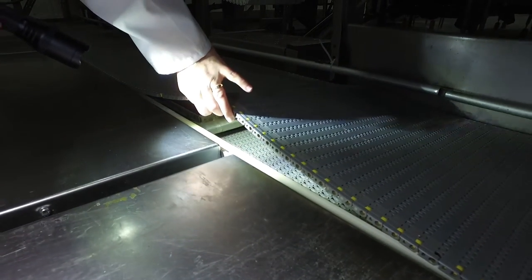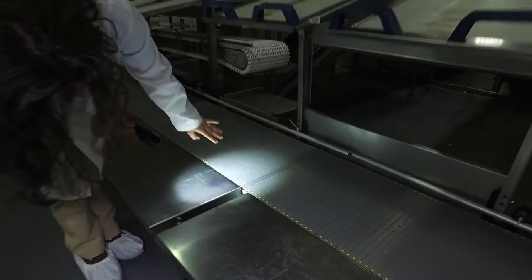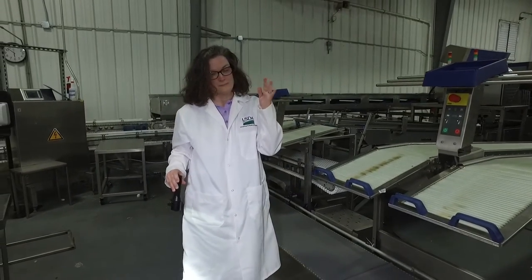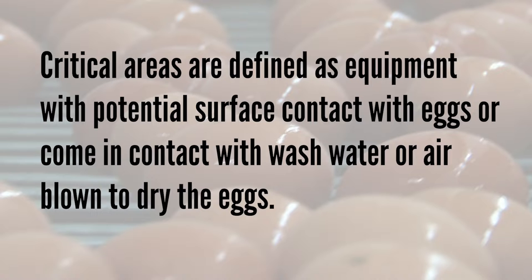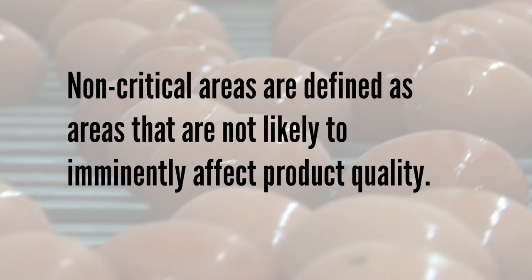So what is organoleptic inspection? Organoleptic inspection assessments include sight, smell, and touch. However, microbial growth will not always be seen, smelled, or felt. Critical areas are defined as equipment with potential surface contact with eggs, or that come in contact with wash water or air blown to dry the eggs. Non-critical areas are defined as areas that are not likely to imminently affect product quality. Non-critical does not mean it is not important. Non-critical unsatisfactory conditions should be addressed after the processing line has been started, unless unable to safely do so during processing.